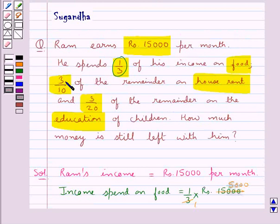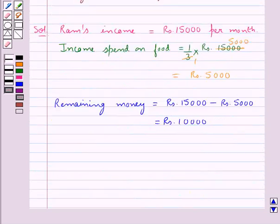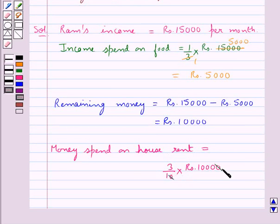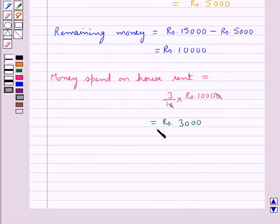Next, he spends 3 upon 10 of the remainder on house rent. So money spent on house rent is equal to 3 upon 10 into the remaining money, that is Rs 10,000. The zeros cancel and this is equal to Rs 3,000. So he spends Rs 3,000 on house rent.